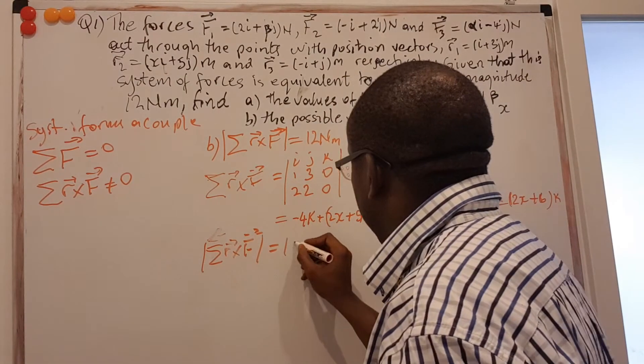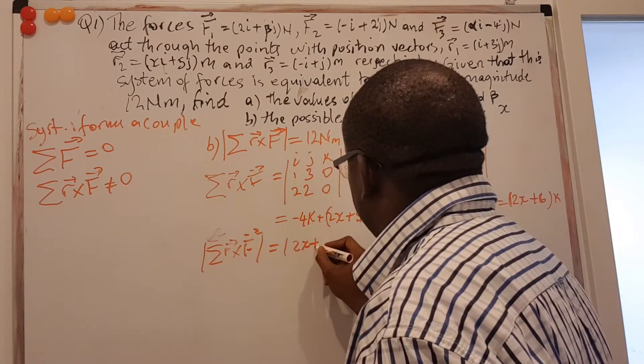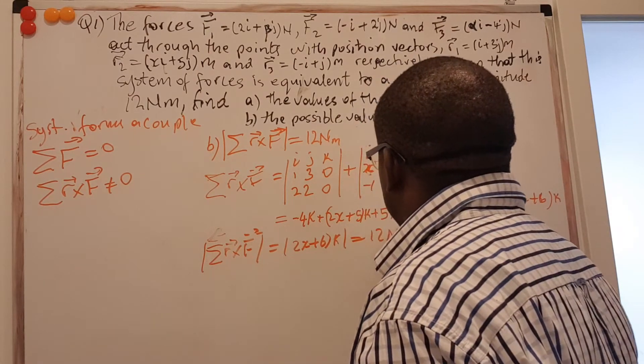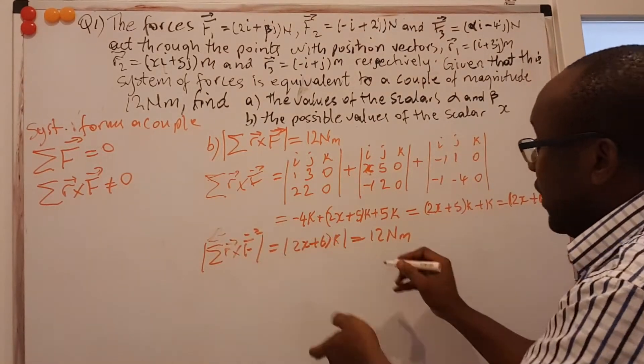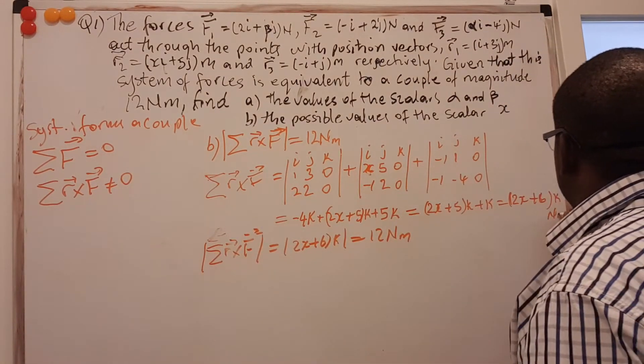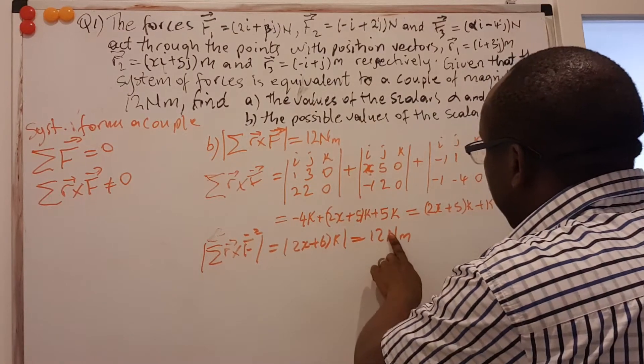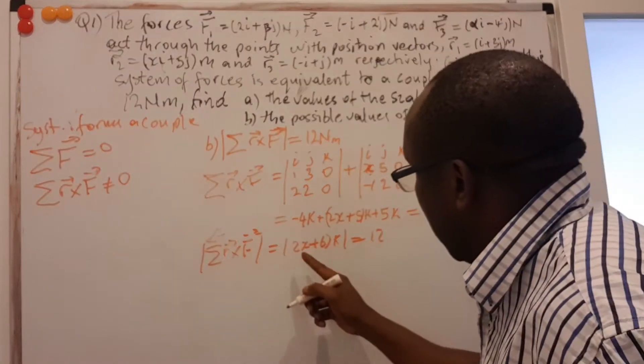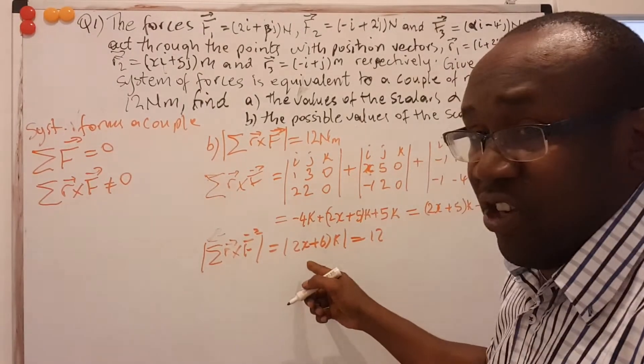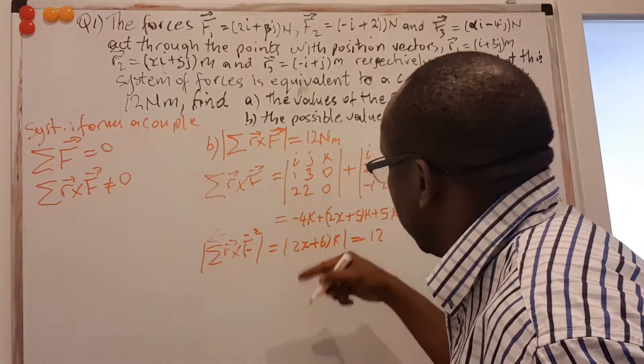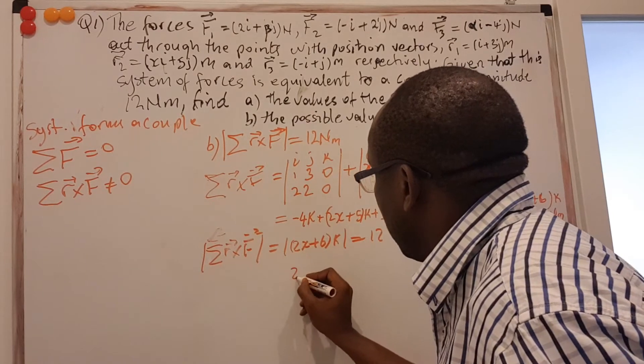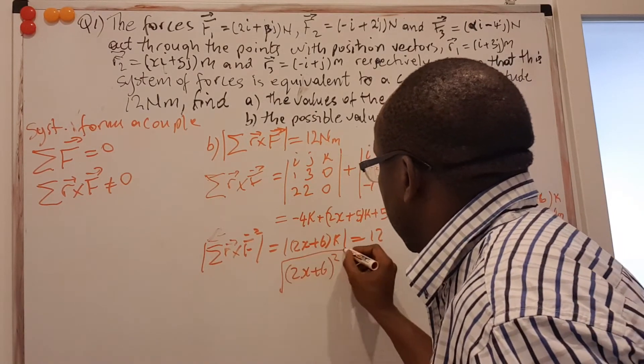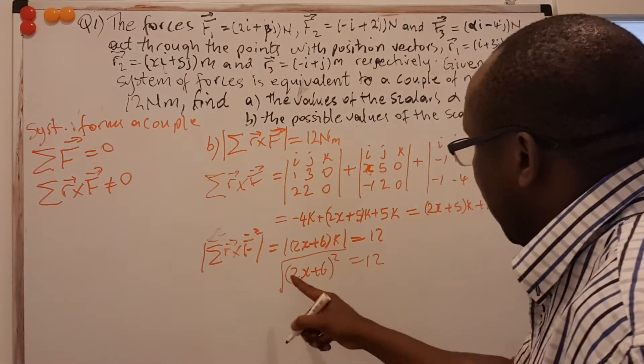And the magnitude of (2X + 6)k. And we are told the answer is 12 Nm. So this is Newtonmeters. So the magnitude is simply the square root. So that's square root of (2X + 6)² equals 12.